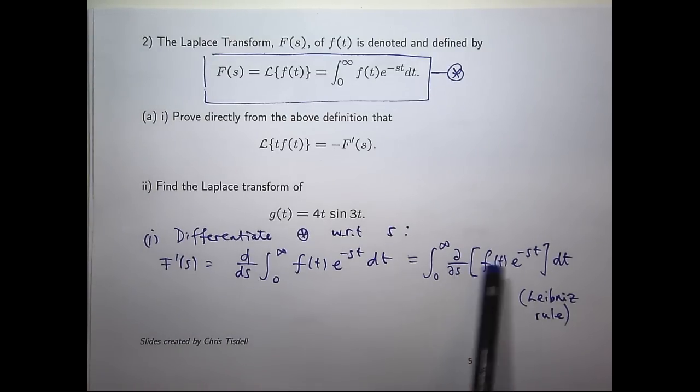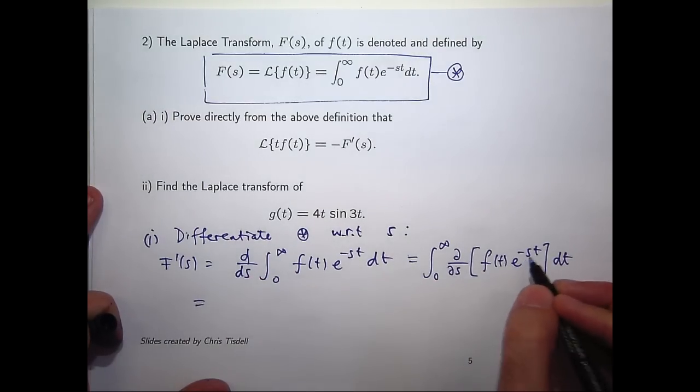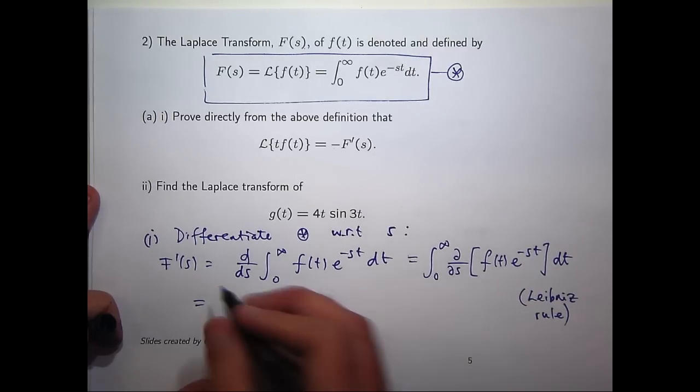All right, well, let's look at the partial derivative of this with respect to s. Well, f of t is not going to do anything, but e to the minus st, what's going to happen there? Well, imagine the t, the minus, well the t is a constant, and differentiate with respect to s, so the minus t is going to come to the front.